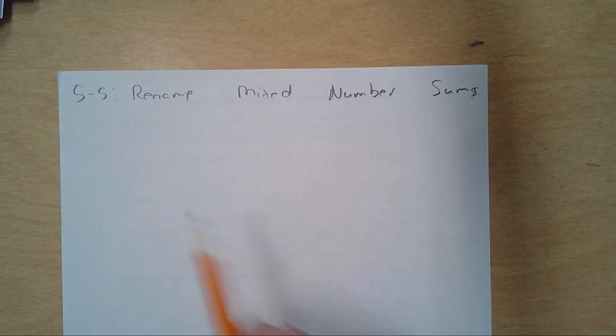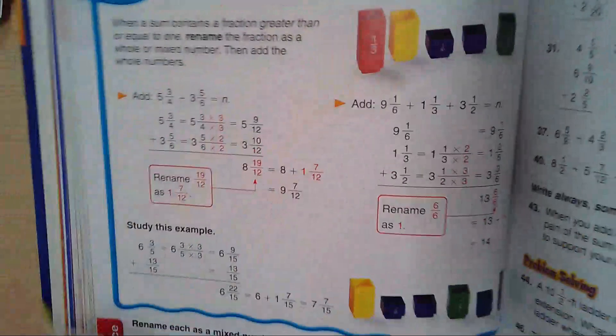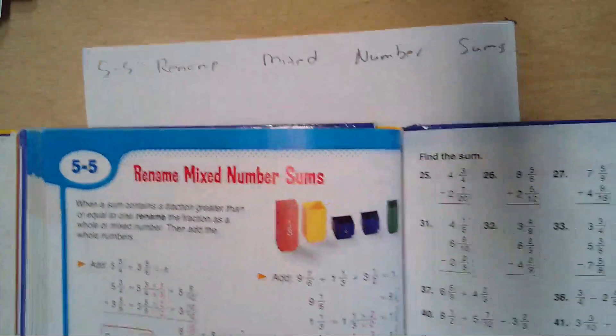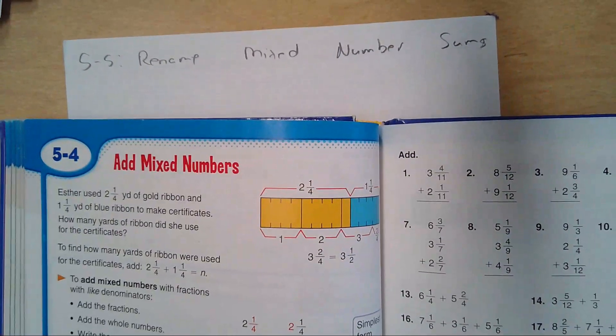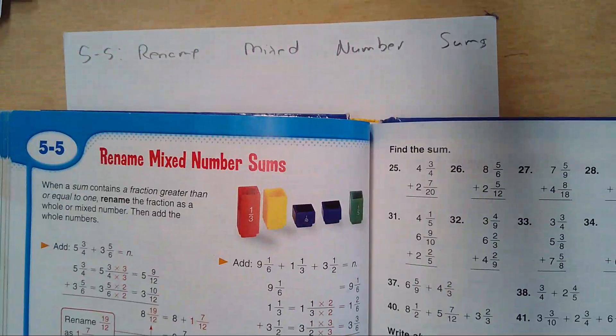All right. 5-5, renaming mixed number sums, page 172, 173. We'll start with some of this stuff on 172. Real briefly for the camera, this is our last ending lesson of chapter 5.